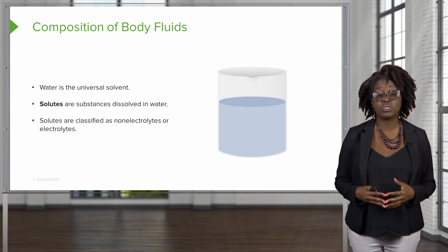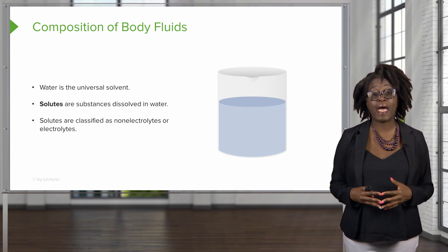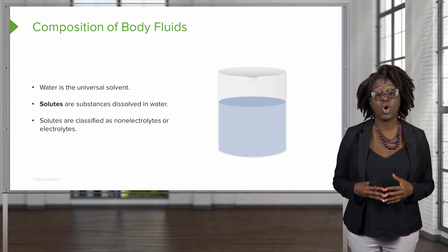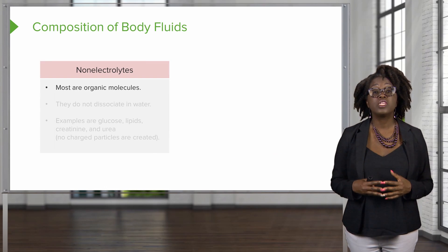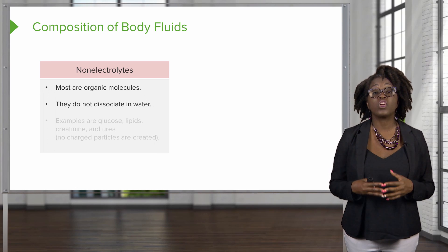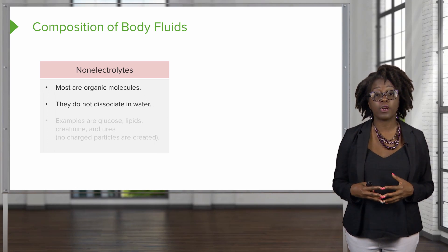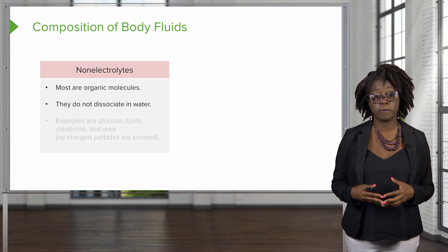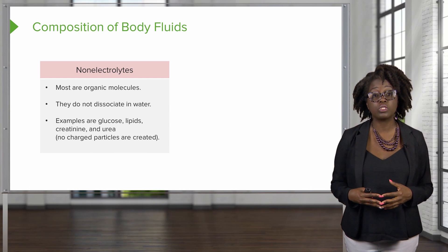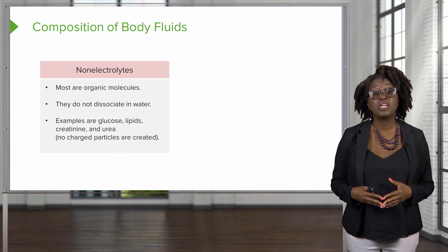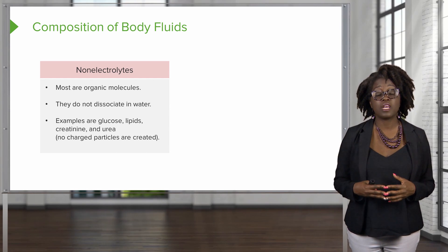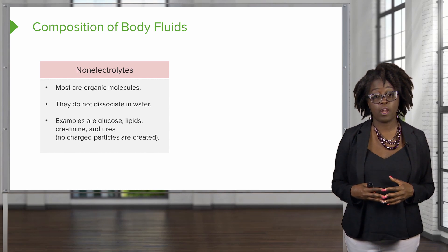We can classify solutes based on how they react in water, classifying them as either non-electrolytes or electrolytes. Non-electrolytes are going to mostly be organic molecules and are not going to dissociate or break apart when they are placed in water. Examples of non-electrolytes include glucose, creatinine, and urea. Lipids are also an example of a non-electrolyte, but unlike these other examples, lipids do not dissolve in water at all.